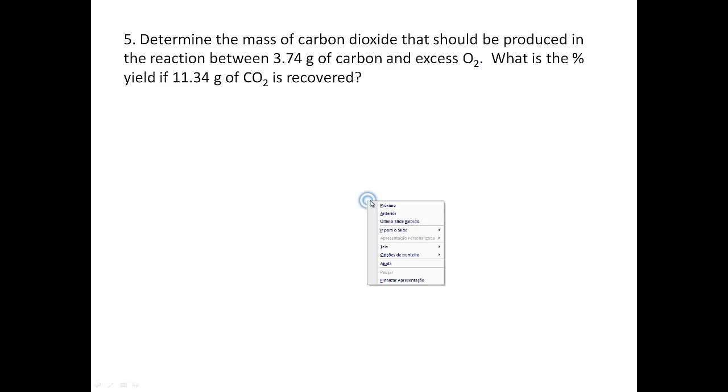First problem: we have to solve word problems. Determine the mass of carbon dioxide that should be produced in the reaction between 3.74 grams of carbon and excess oxygen. What is the percent yield of CO2? Remember, step one, always get your balanced chemical equations.